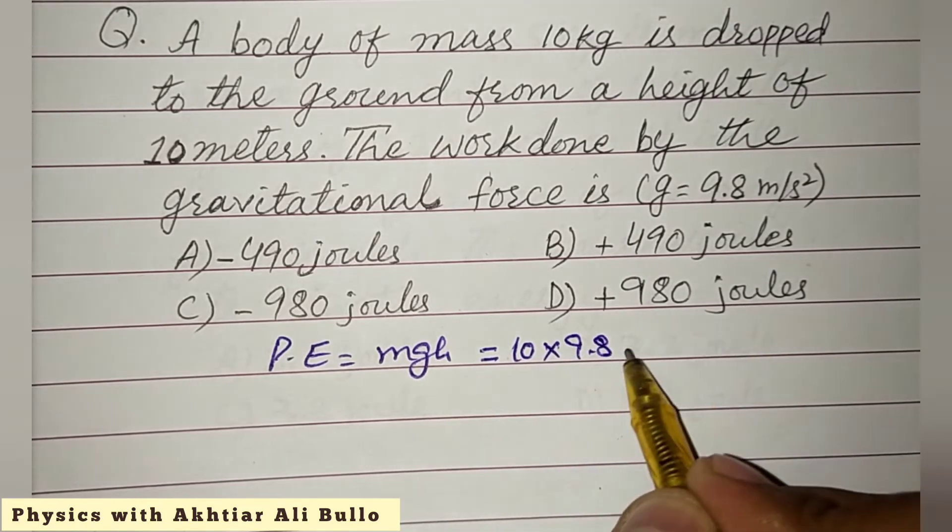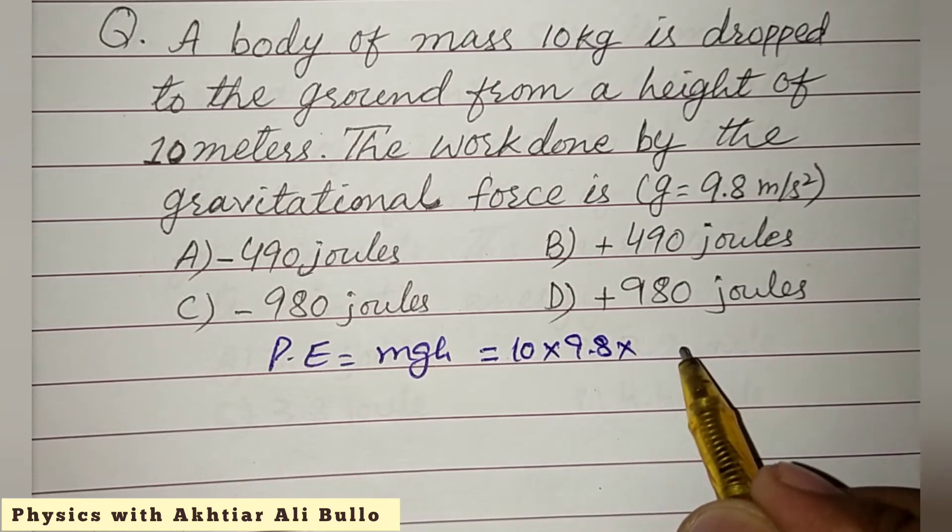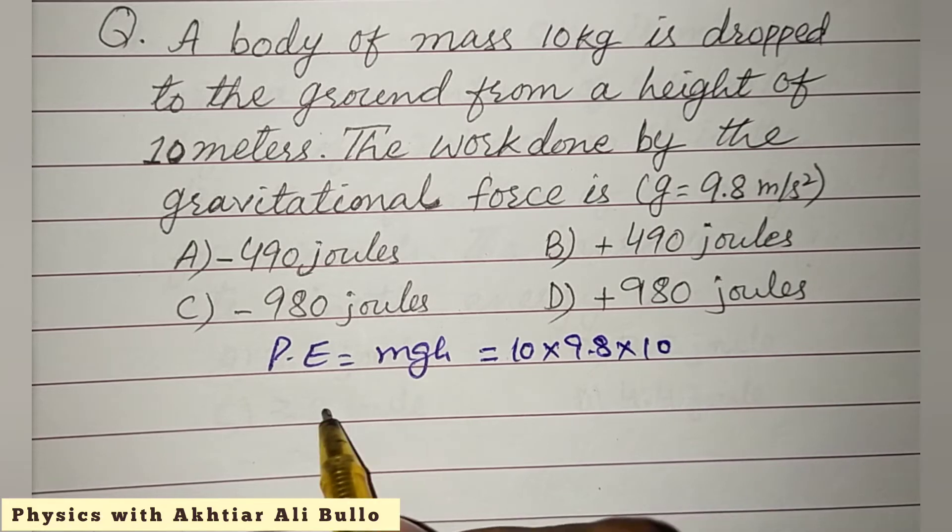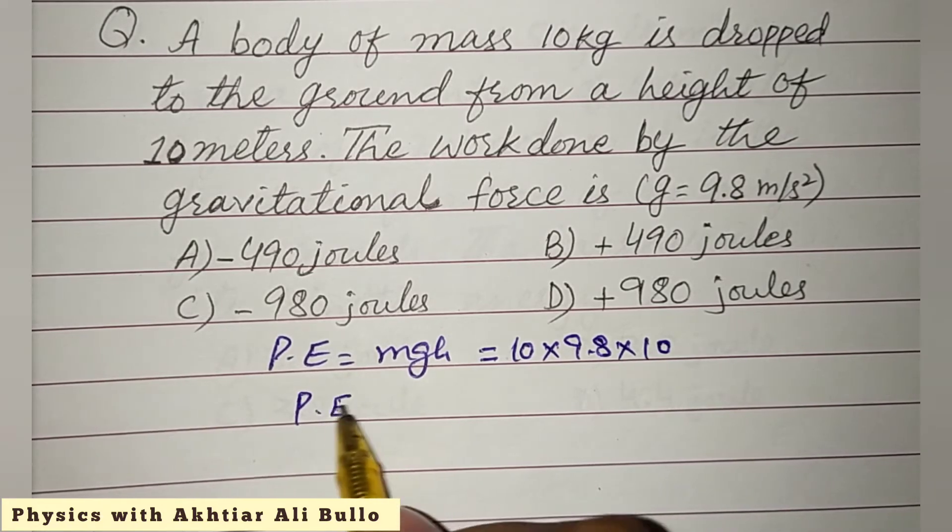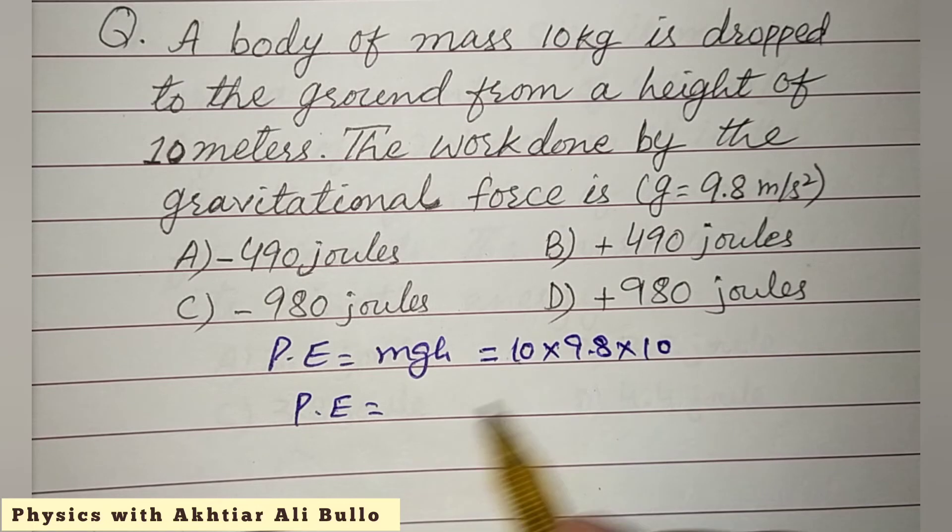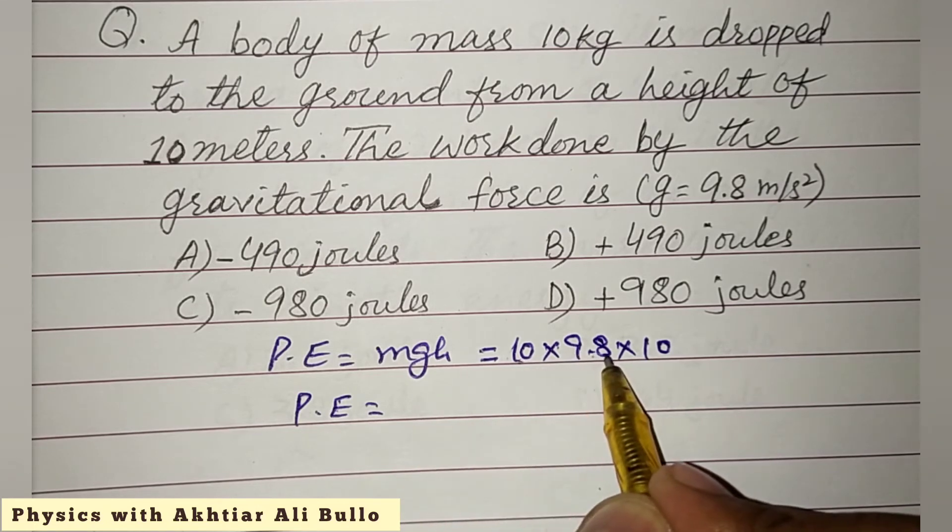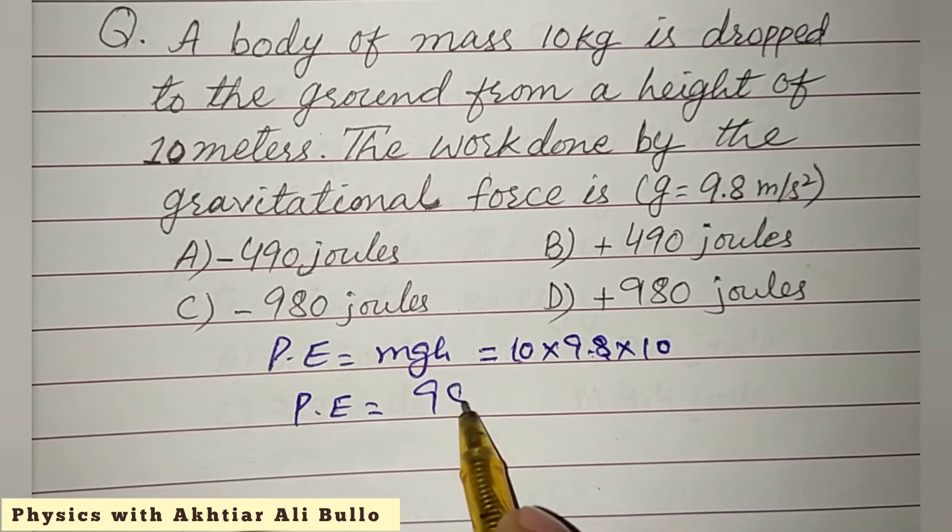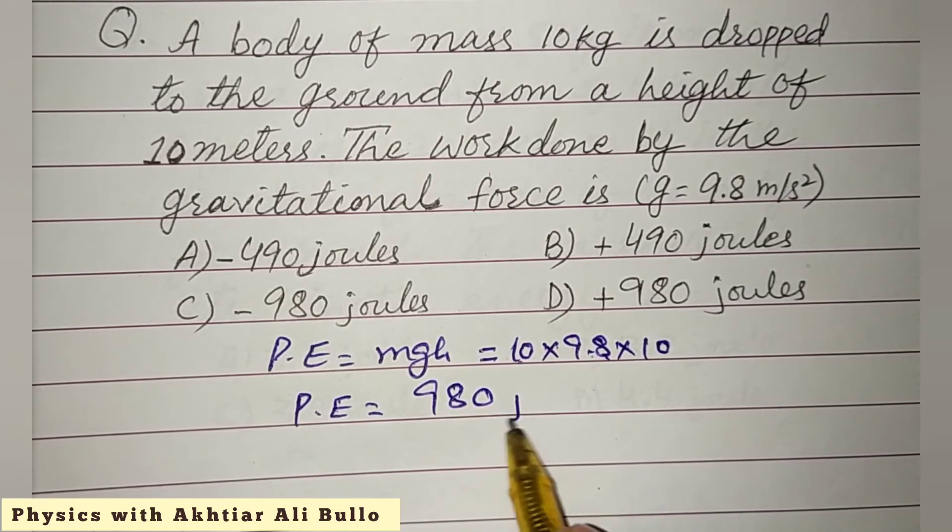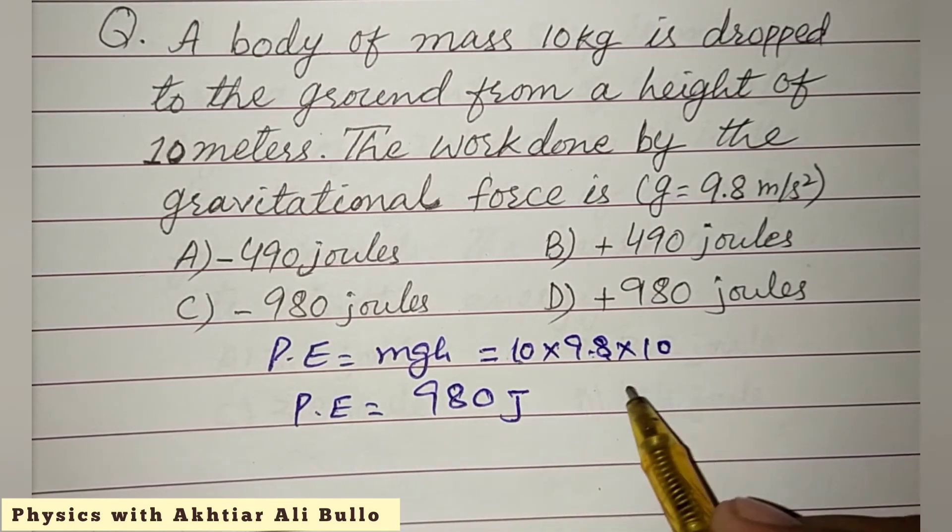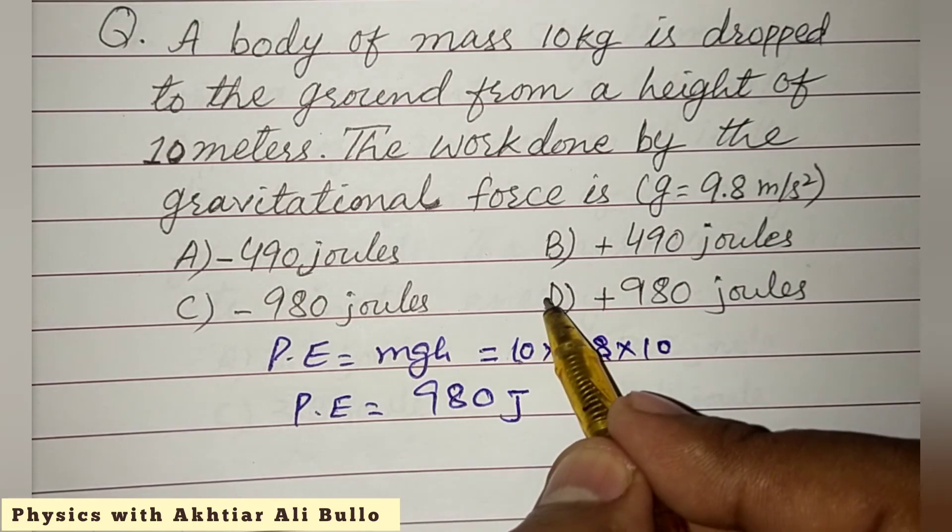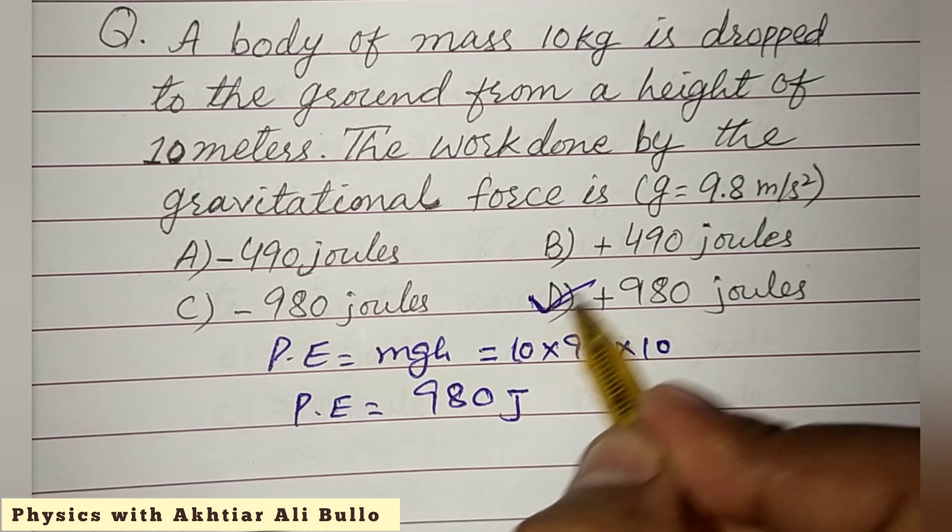So potential energy will be 10 into 9.8, it will be 98 into 10, so it will be 980 joules. So the correct option will be D, plus 980 joules.